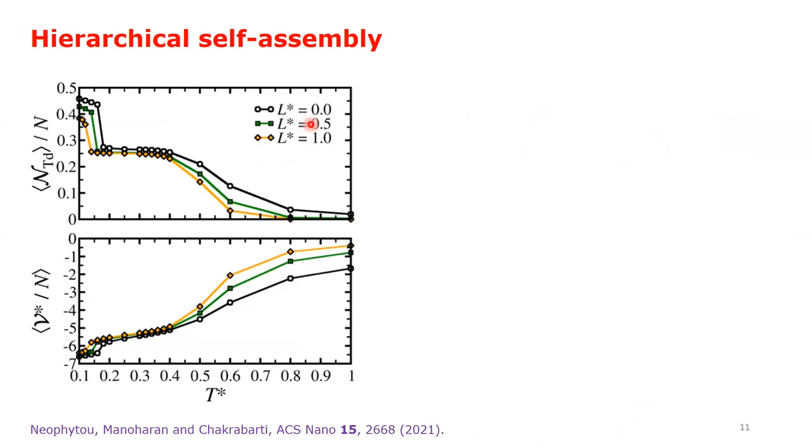In the limit of L star equal to zero, we have a tetrastack crystal. However, the self-assembly is a mixed phase with both cubic and hexagonal components.